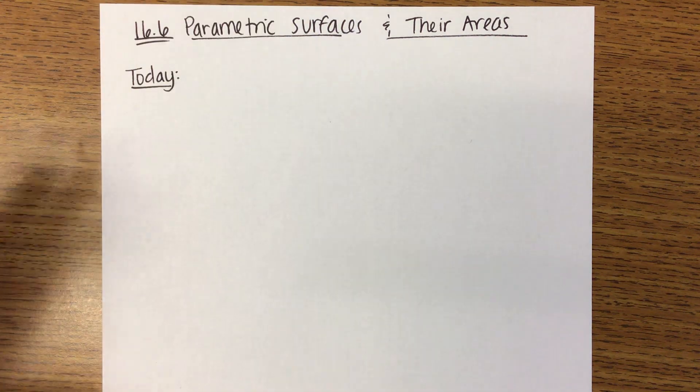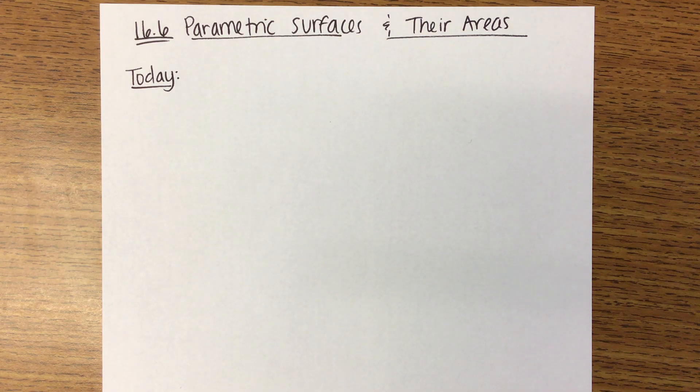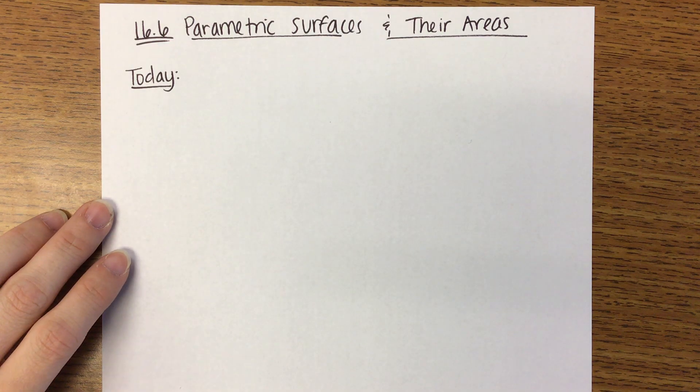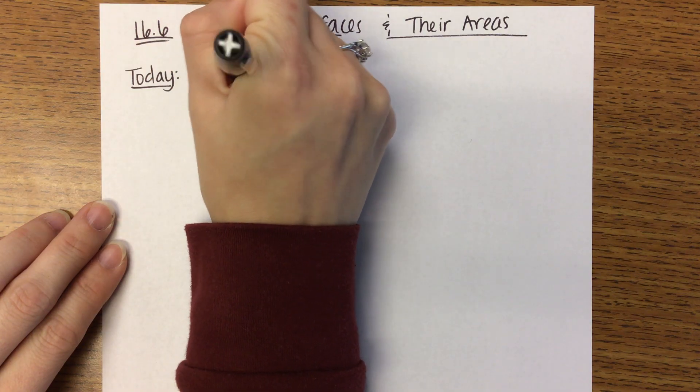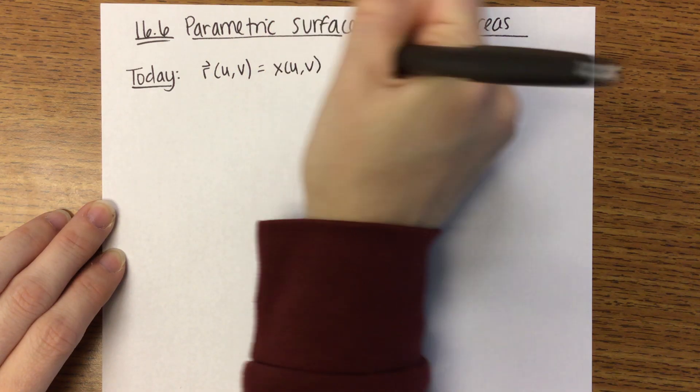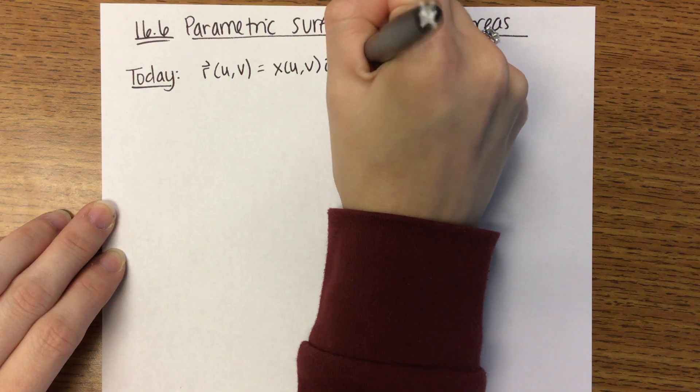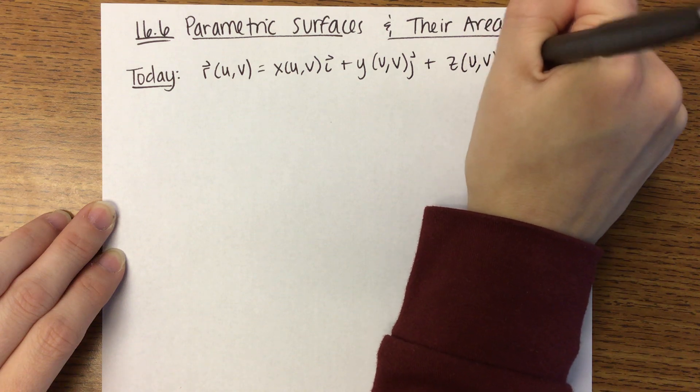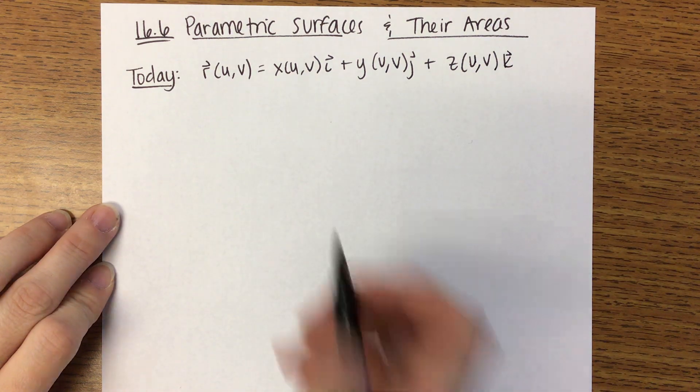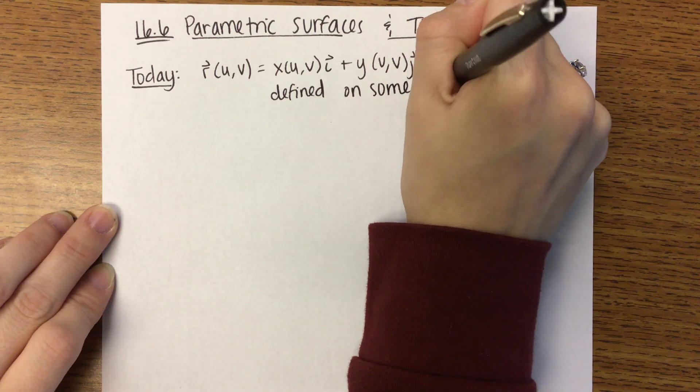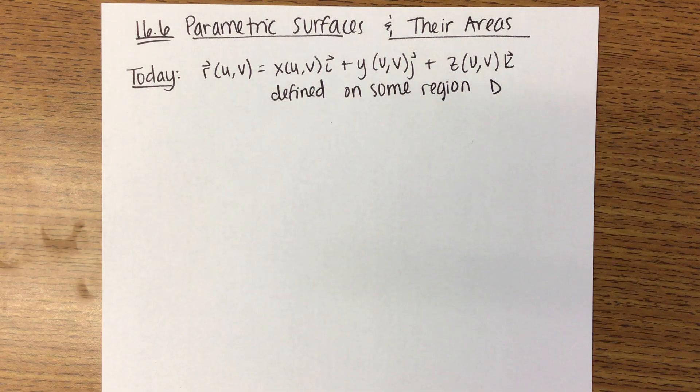So, like I said, we're looking at parametric surfaces today. They're going to have a different form than the parametric surfaces you've seen in the past. In the past, you've seen R of T, so your surface is being defined in terms of T. Now R is defined in terms of U and V.